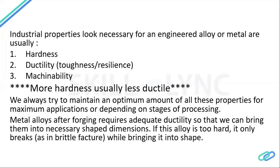As a heat treatment engineer, when I give you a piece of steel, the end product should have either higher hardness or greater ductility than the original — ideally an optimum of both. Hardness is always at the expense of ductility, and ductility is at the expense of hardness. So throughout this webinar, remember: more hardness means less ductile.